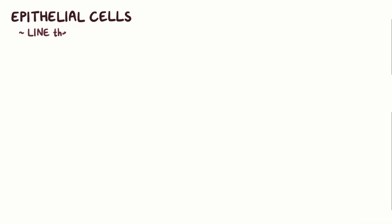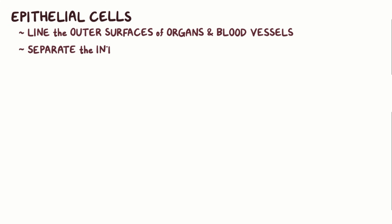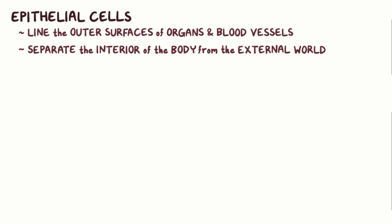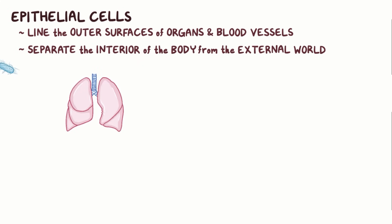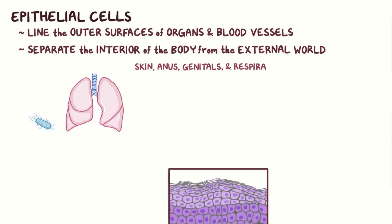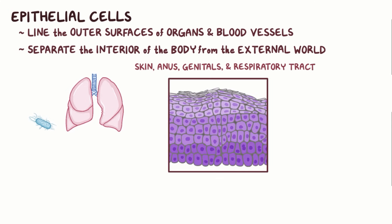Epithelial cells line the outer surfaces of organs and blood vessels, and separate the interior of the body from the external world. They primarily serve as a protective barrier to invasion by pathogenic bacteria, fungi, parasites, and viruses, and to water loss. In locations like the skin, anus, genitals, and respiratory tract, they can be stratified, having more than one layer of epithelial cells.